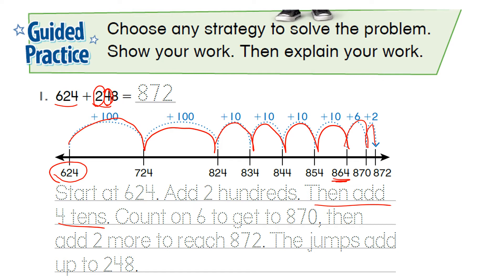So then add 2 more to reach 872. The jumps add up to 248, which is the number that we are adding. So this is just one example.